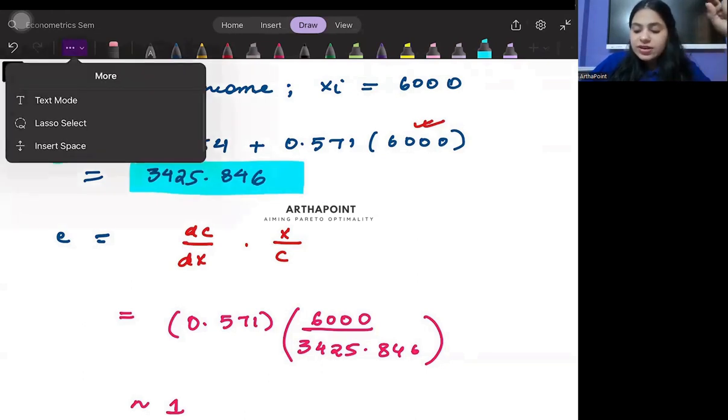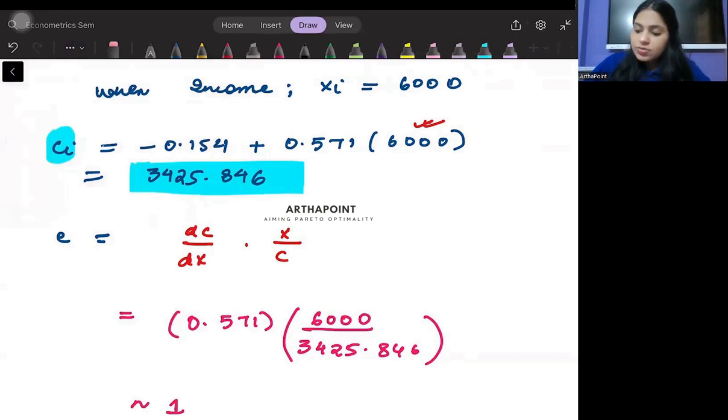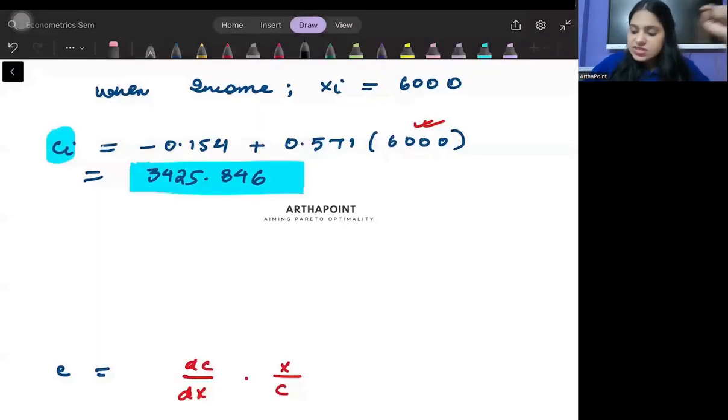You have got one combination here and the combination that you have got is that when your income is 6,000,